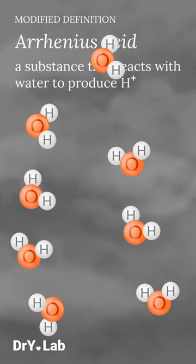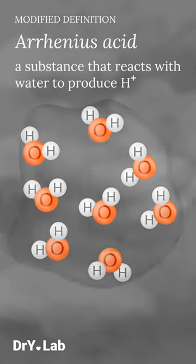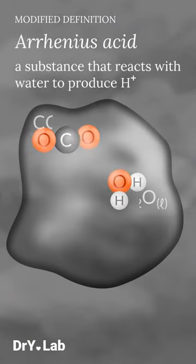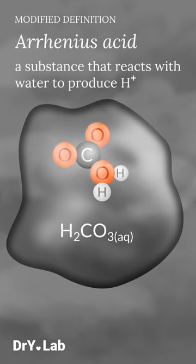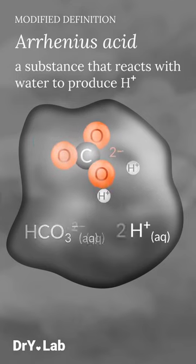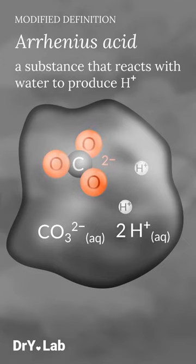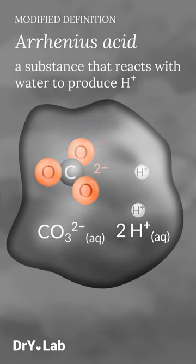Water vapor in the atmosphere condenses into droplets of rain. Carbon dioxide gas reacts with liquid water to form carbonic acid, yielding up to 2 hydrogen ions per carbonic acid molecule. Therefore, rain water is mildly acidic.